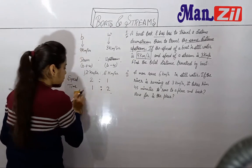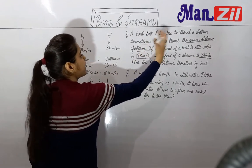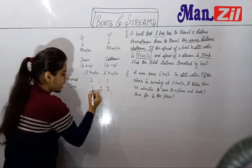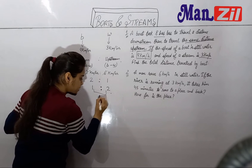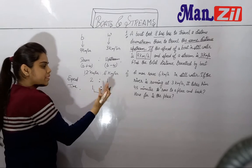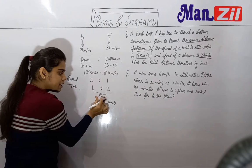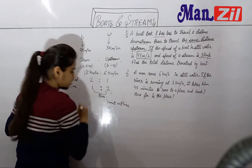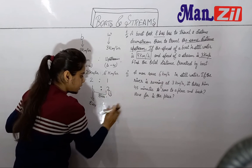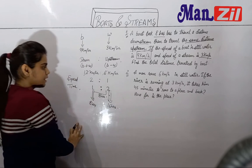The ratio of time is 1 ratio 2. Now, the difference between the two time units is 2 minus 1, which is 1 unit. That 1 unit equals 8 hours — because the boat took 8 hours less going downstream than upstream. So 2 units will be 16 hours.